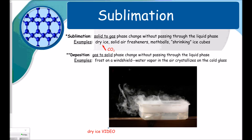Turn to page four. Sublimation is when you go from solid to gas phase without passing through the liquid phase. Examples include dry ice (which is actually carbon dioxide, not special water), solid air fresheners, moth balls, and shrinking ice cubes. Deposition is the opposite — going from gas to solid without passing through liquid. The best example is frost forming on a windshield: water vapor in the air crystallizes on cold glass, going straight from gas to solid.